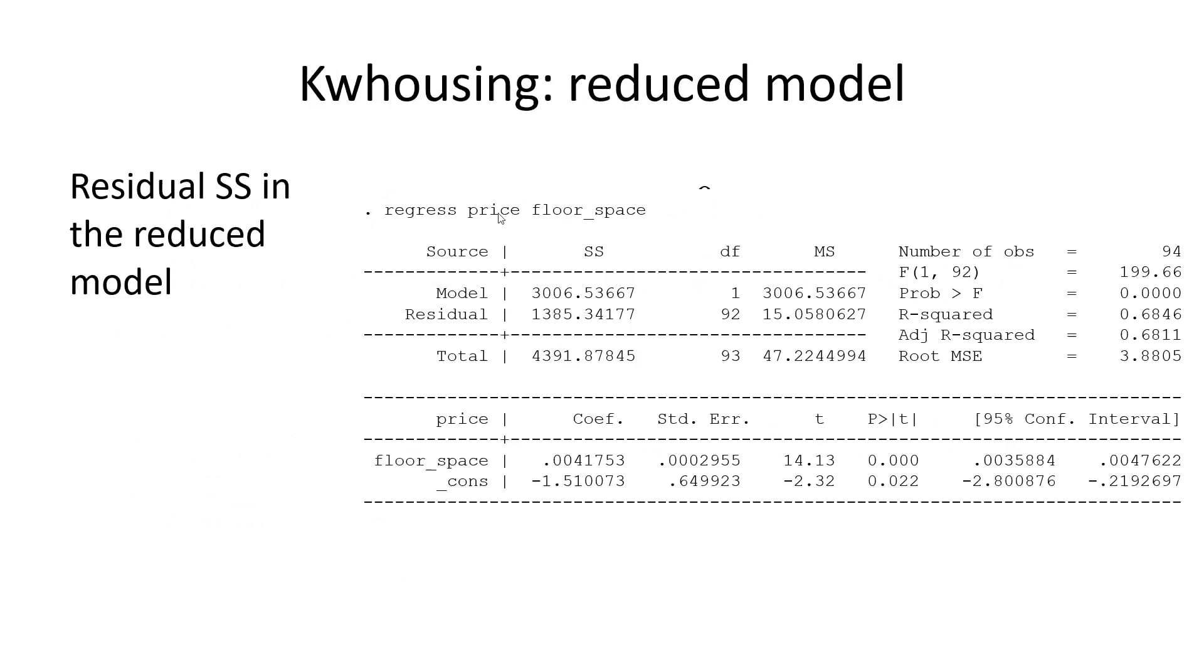Now we run a regression just on floor space. We get a different sum of squares here. This sum of squares needs to be larger because we have fewer variables to explain the variation. There's more variation left over, so the residual sum of squares will be larger.